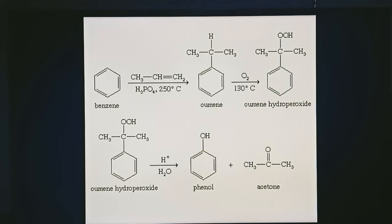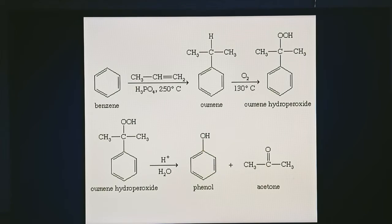The procedure involved here is: benzene and propene are heated at 250 degrees Celsius (523 Kelvin) in a closed vessel in the presence of H3PO4, and there is formation of cumene — that means isopropyl benzene. Then, air is passed through cumene with 5% aqueous sodium carbonate at 130 degrees Celsius, forming cumene hydroperoxide. That means the oxidation of cumene takes place.